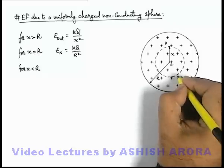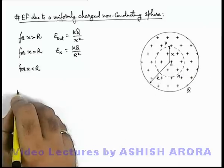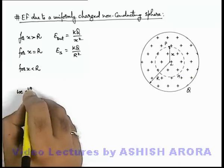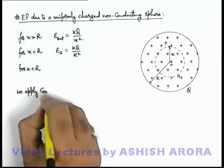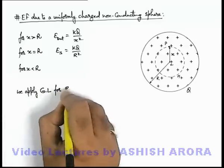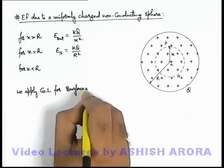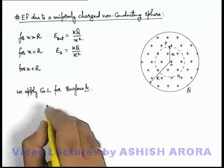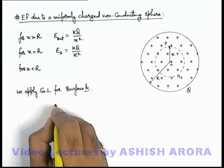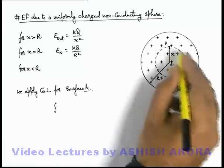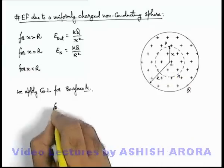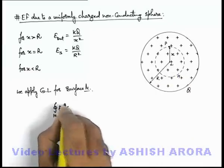And say if this surface is M here, we apply Gauss law for surface M. Then here we can use the total flux which is coming out from this Gaussian surface. For the closed surface M we use E dot dS.